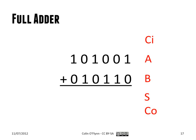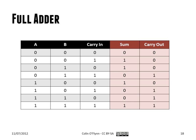From the half adder, we build the full adder. The difference with the full adder is that it has a carry input. With the half adder, we generate one plus zero as a sum of one, carry of zero. The carry moves up and becomes a third input — so we have carry in, sum out, and carry out. The truth table just has this additional column, carry in, and it's what you'd expect from binary addition.